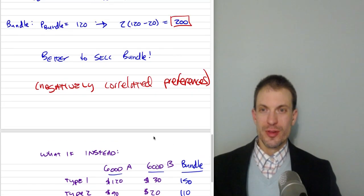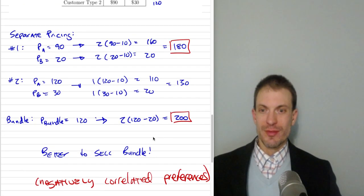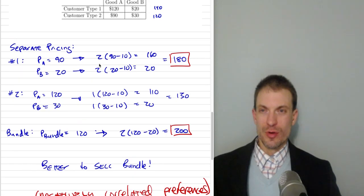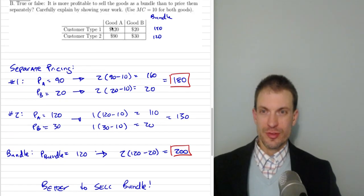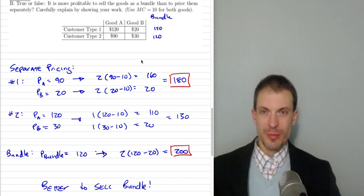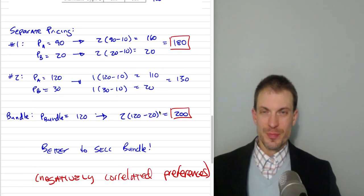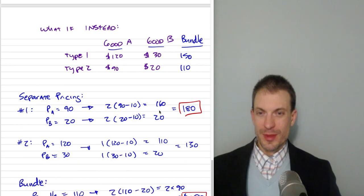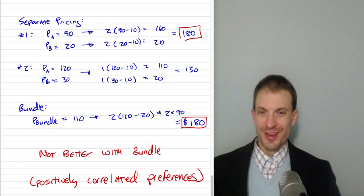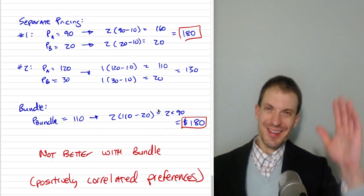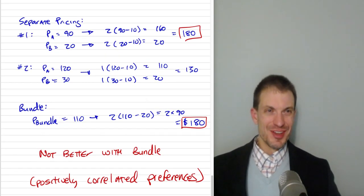In order for bundling to be useful, we need negatively correlated preferences — one person has the high willingness to pay for one good, and the other person has the high willingness to pay for the other good — and the demands have to be fairly similar. I hope you liked the video. See you next time.